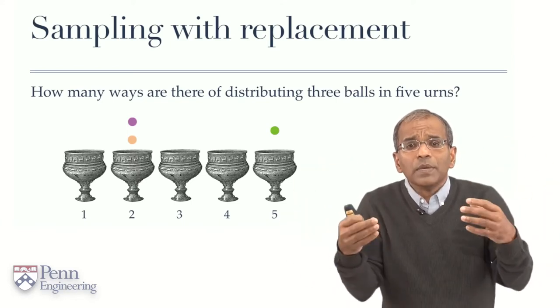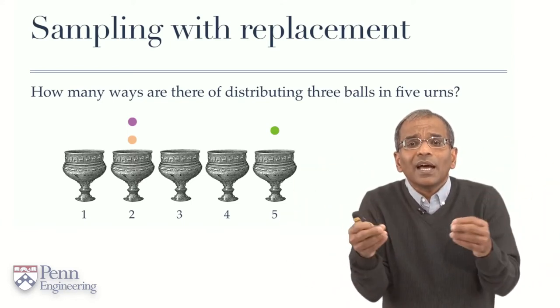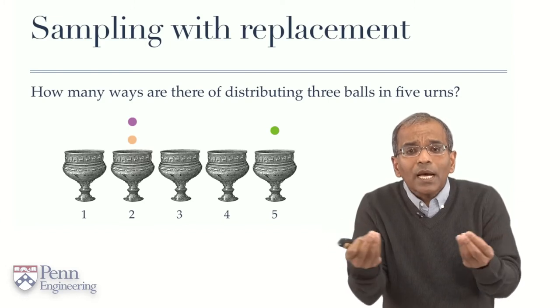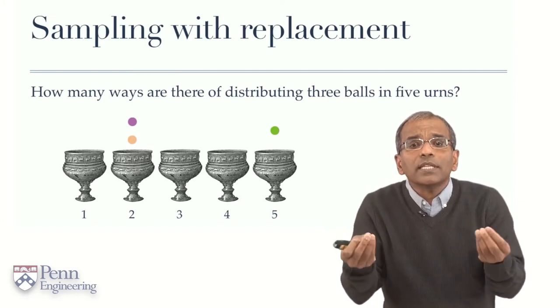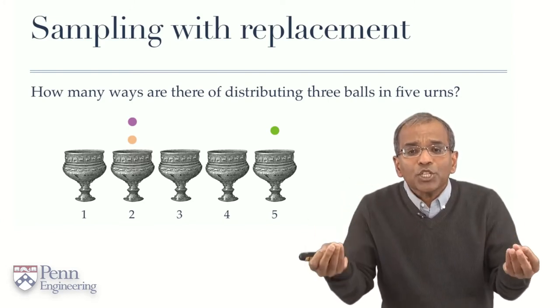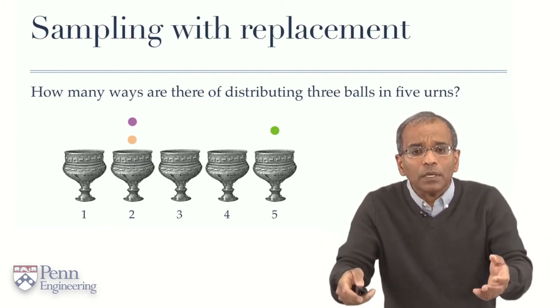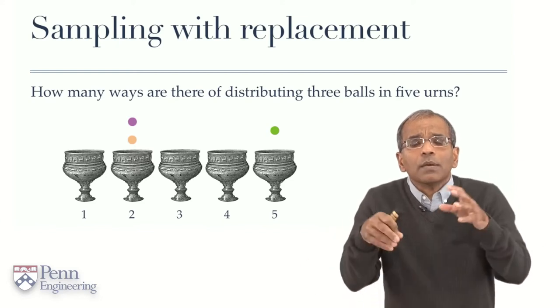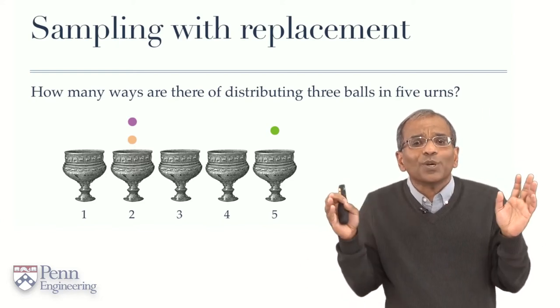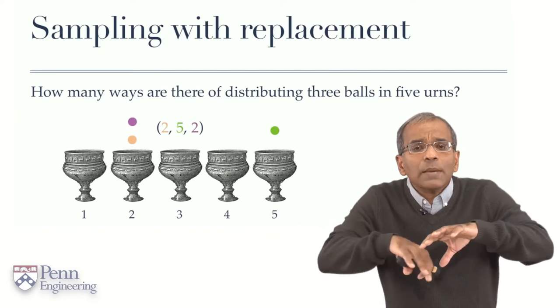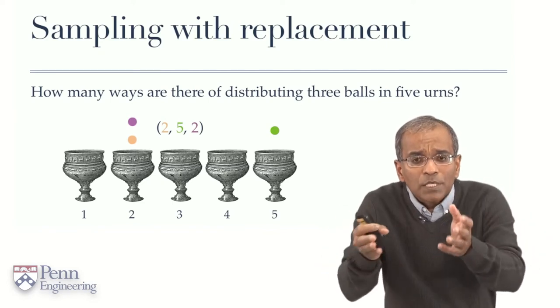Now the moment you do that, you can compact all of this by giving me three numbers: the urn numbers, in order, where these balls in this order—peach, green, purple—have ended up. And so in this particular example, all you'll have to do is give me two, five, and two. And that describes completely the experiment for me.